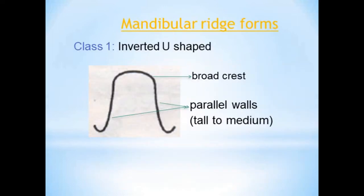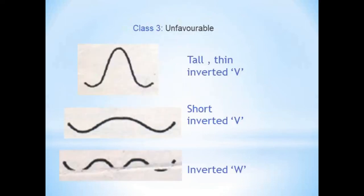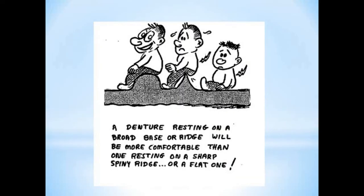The mandibular residual ridge is classified as Class 1 — inverted U-shape with broad crest and parallel walls, either tall or medium — which is the most favorable. Class 2 is again an inverted U-shape but with a flat crest and short walls. Class 3 is the unfavorable form: it can be a tall thin inverted V, a short inverted V, or an inverted W. A denture resting on a broad base or ridge will be more comfortable than one resting on a sharp spiny or flat ridge.